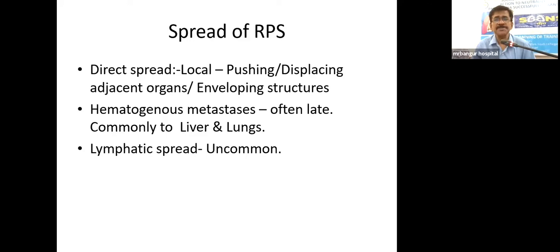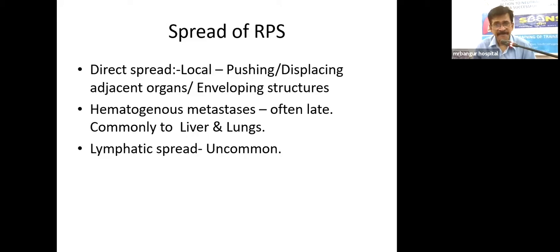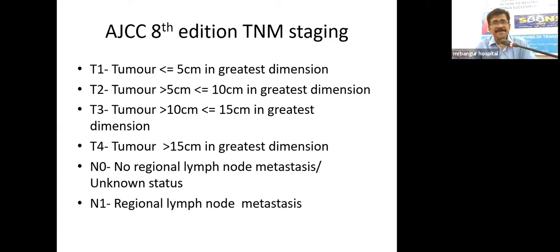Retroperitoneal sarcoma can spread by direct spread — as it grows it pushes local structures, can engulf or envelop them, or directly infiltrate. Since the posterior boundary is rigid (vertebral body and muscles), most tumors grow anteriorly, initially pushing organs and subsequently causing direct infiltration. Hematogenous spread is quite late; common sites are the liver and lungs. Lymphatic spread is uncommon but can occur in some sarcomas.